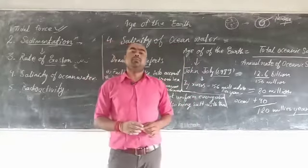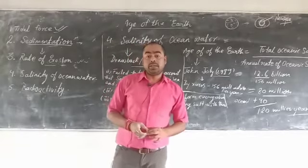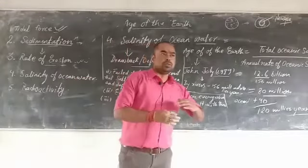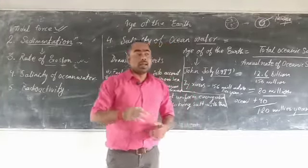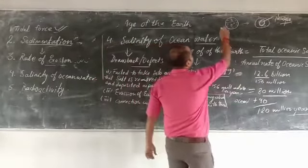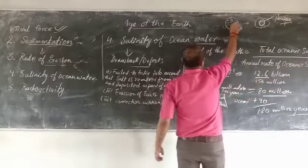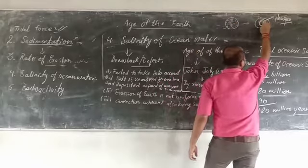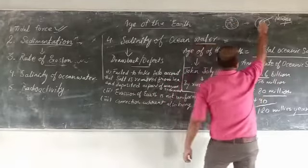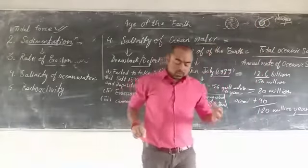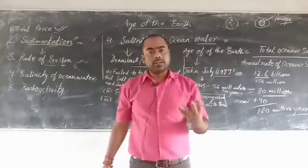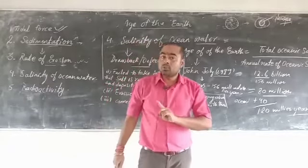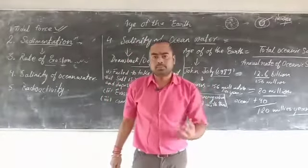Next is the salinity of ocean water — how can we calculate the age of the earth using the salinity of ocean water? At the origin of the earth, there was plenty of enormous rainfall on the earth's surface and the earth was a watery planet. After that, Pangaea — the continental mass — came into existence. When the earth was full of water, that water was in its pure form; it was not saline, it was fresh water.